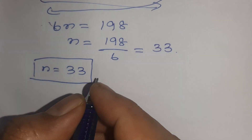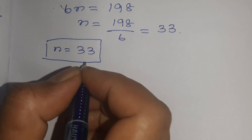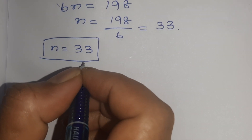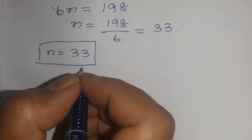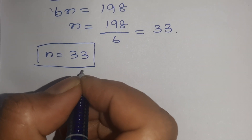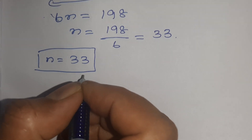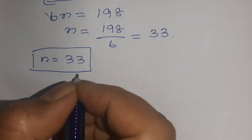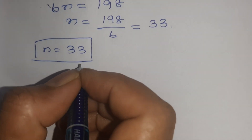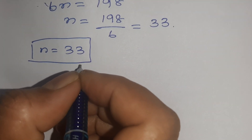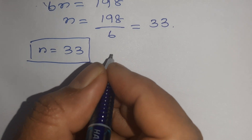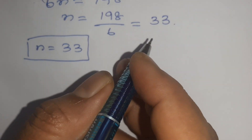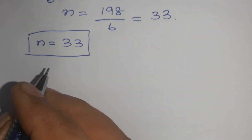So the first question answer is N = 33. At N = 33, the Nth terms of both APs are equal, that is A33 is equal for both the two APs. So the first question is over.